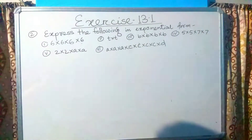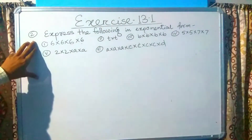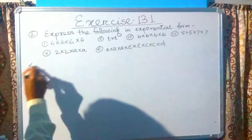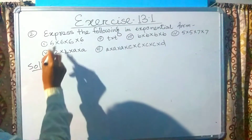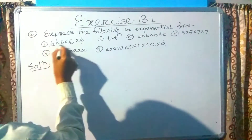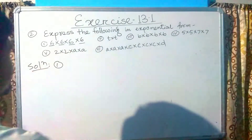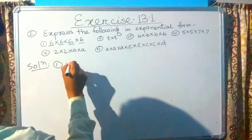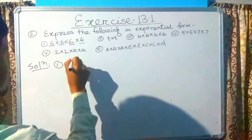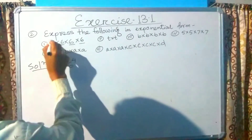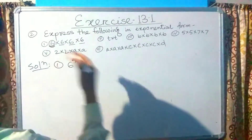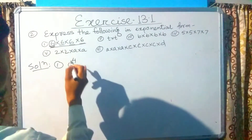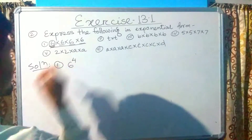Now we come to the next question: express the following in exponential form. The first one is 6 multiplied by 6 multiplied by 6 multiplied by 6 — 6 is given 4 times. So the base will be 6 and the power is 4. The exponential form is 6 raised to the power 4.